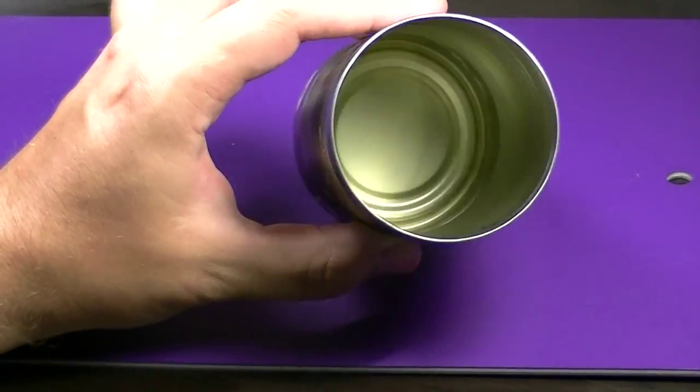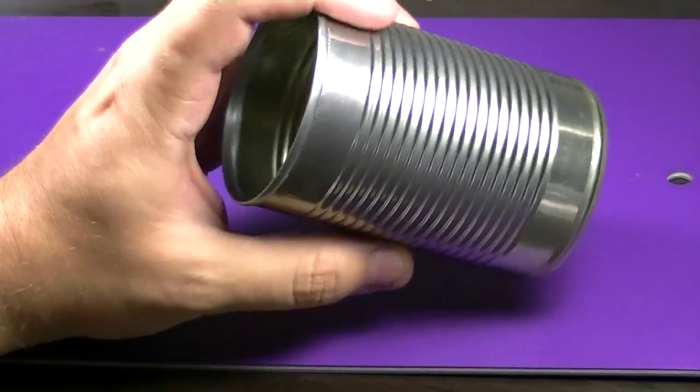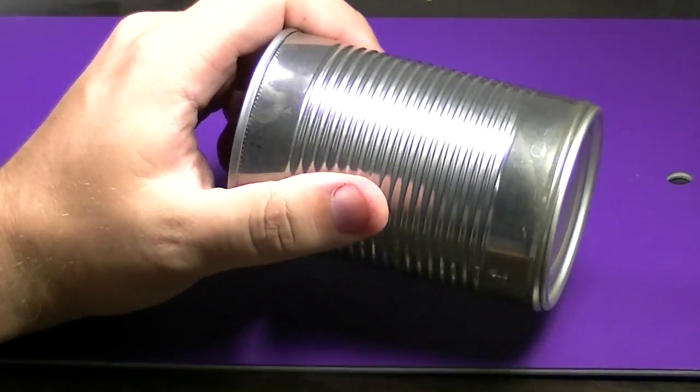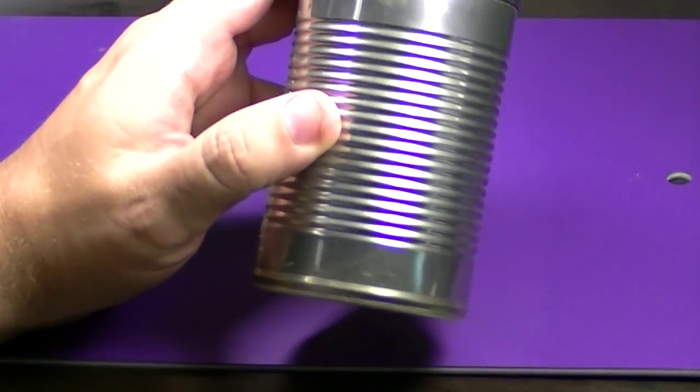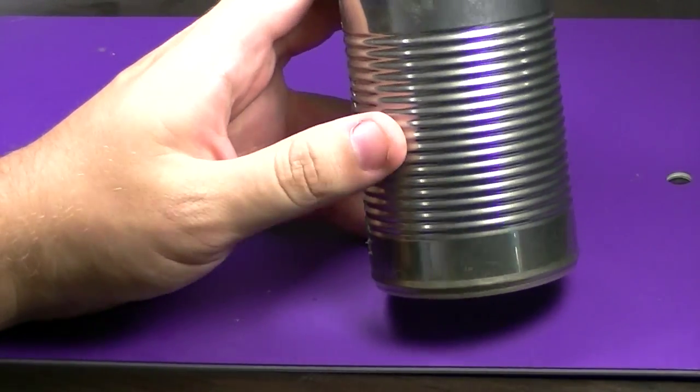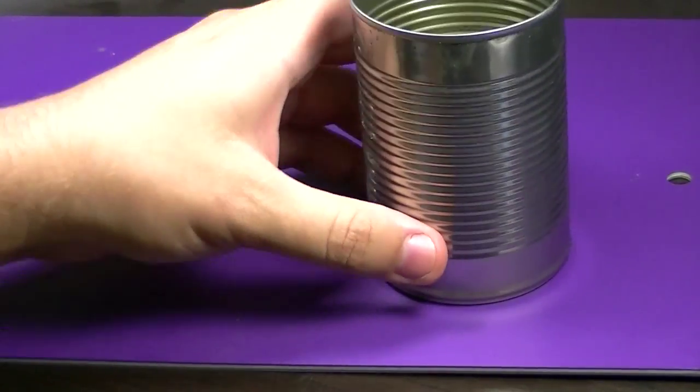So our first big material is obviously the soup can. You want to make sure the label is taken off, it's cleaned inside and there's no sharp edges as you don't want to cut yourself on your terrain. But that's the most important piece for this build.